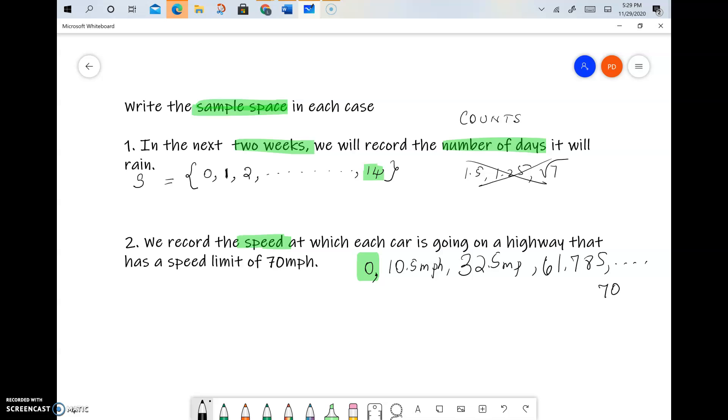If we can assume that all cars are either going at speed limit or below speed limit. Now here, since it's not a count and the numbers, decimal numbers and other numbers are possibilities, we have to describe the sample space as a range of numbers, as a range of values.